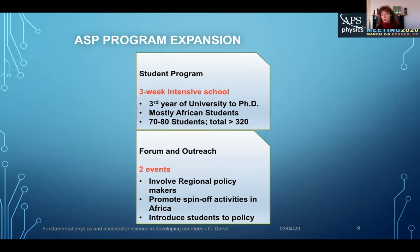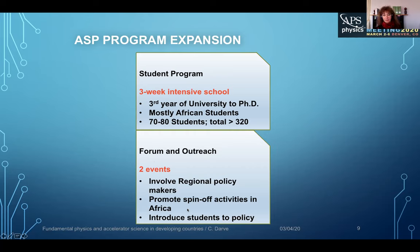Since 2010, the backbone of this program is really those three weeks of intensive school for the students. Up to now we have on the order of 320 students who came to those different schools. Beyond the academic support, we go further to foster physics in different countries in Africa. We have a forum and outreach days in which we try to involve policymakers and promote different activities so that something remains permanently in those countries.